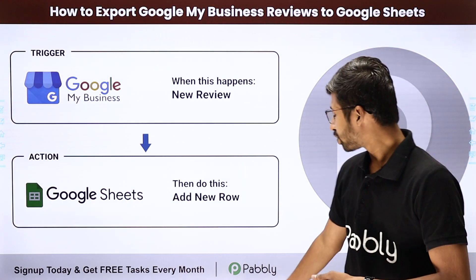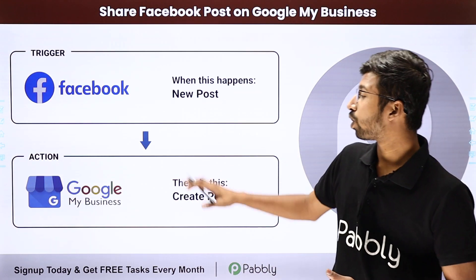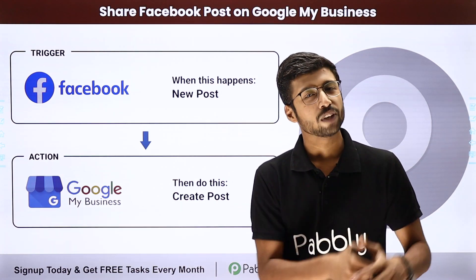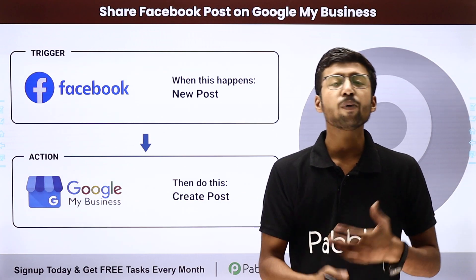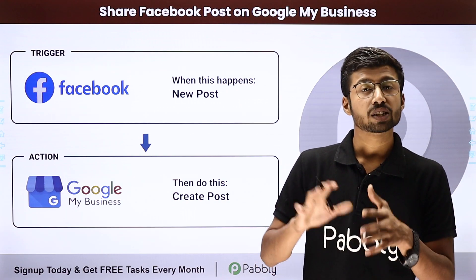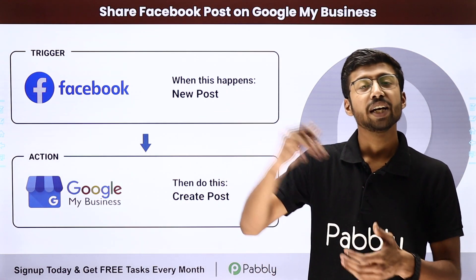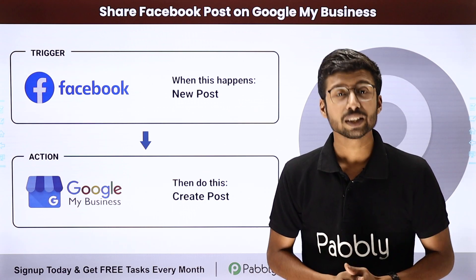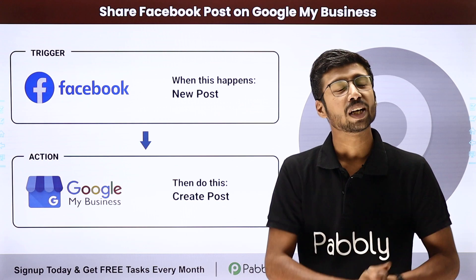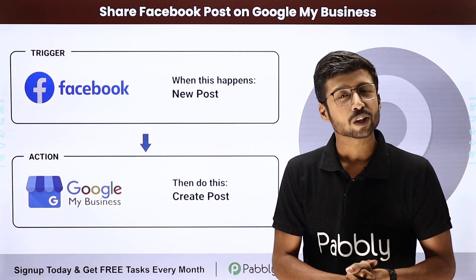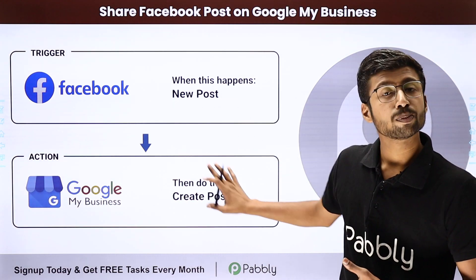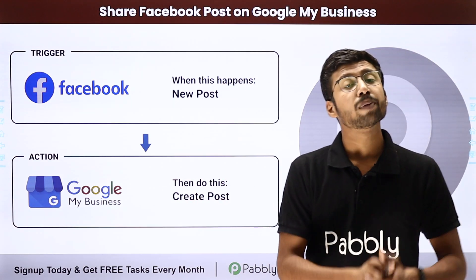Moving ahead to our third automation idea: sharing our Facebook posts on Google Map Business. Suppose you have a large community of clients and customers on Facebook where you keep sharing new products, new events, and new details. You want to add the same post or product details into Google Map Business as well, but manually posting on two different platforms can be very repetitive. So using this automation, whenever you share a new post on Facebook, the same post will automatically be created in your Google Map Business account.